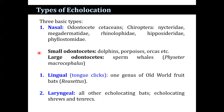There are two types of echolocation. The lingual type is done by clicking the tongue and is performed by the Old World fruit bats such as Rousettus. The laryngeal echolocation is performed by all other echolocating bats and also by shrews and tenrecs.